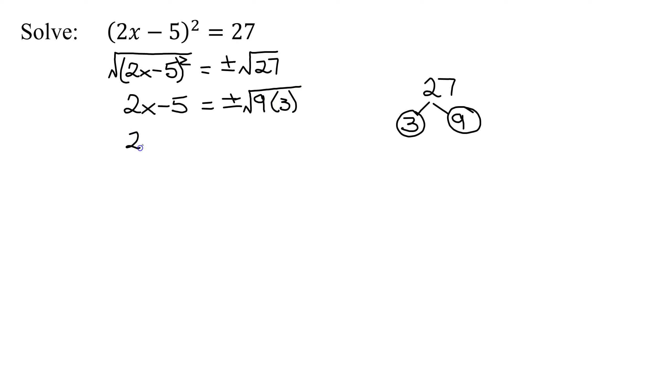So I get 2x - 5 = ±√9 × √3. The square root of 9 is 3. The square root of 3 cannot be simplified, so I have 2x - 5 = ±3√3.